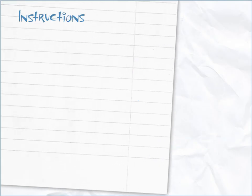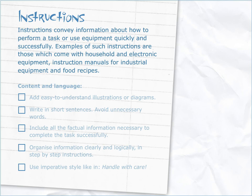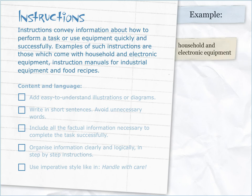Instructions convey information about how to perform a task or use equipment quickly and successfully. Examples of such instructions are those which come with household and electronic equipment, instruction manuals for industrial equipment, and food recipes.